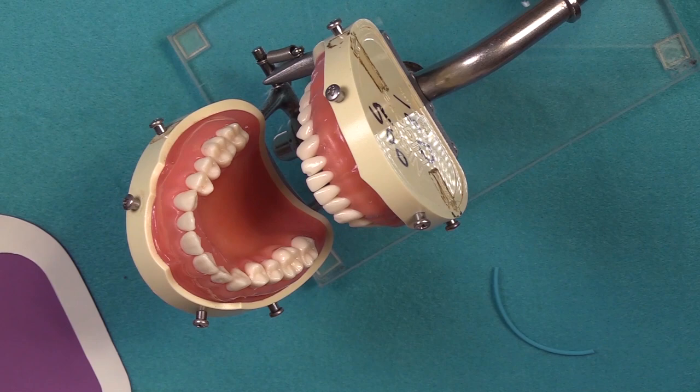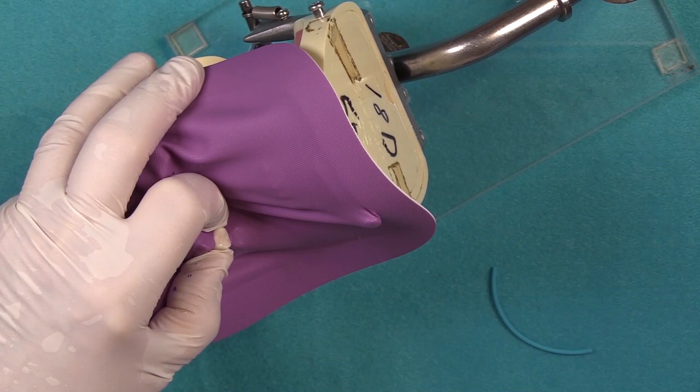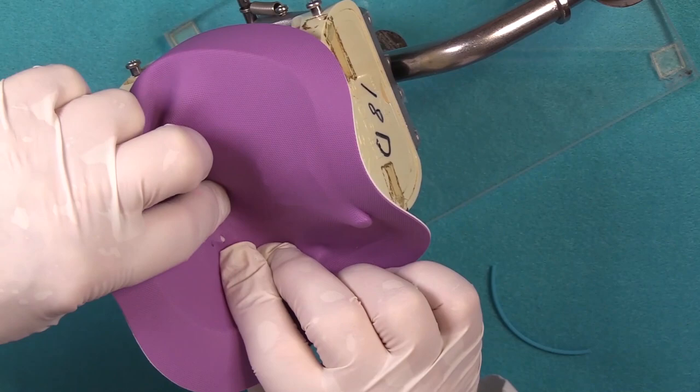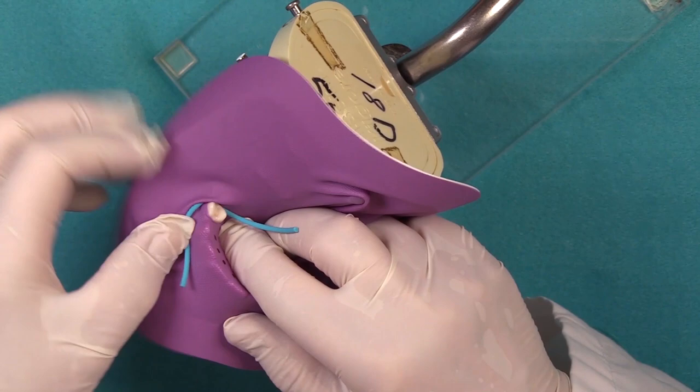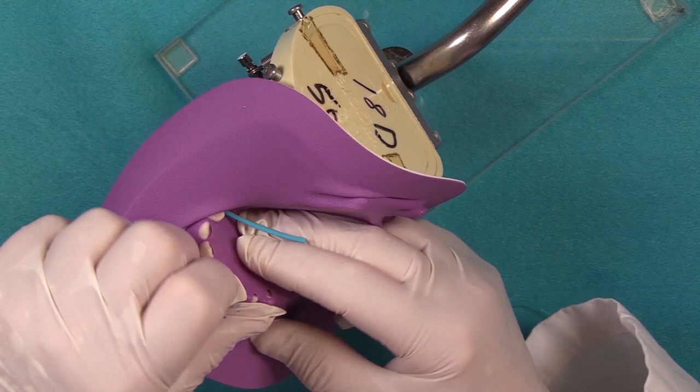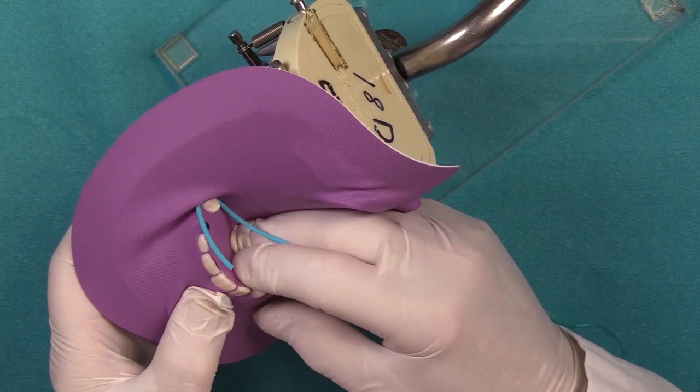We're going to place it here on the bicuspid and this is where it's helpful to have someone additionally to hold the dam down. Putting lubricant on this does help get the dam through the contact but it does make a little bit of a challenge when you're working by yourself. Bear with me a minute. I'm going to try the other side and see if I have better luck. So once I get one side in place I'm going to come over here and line up my teeth here. There we go.